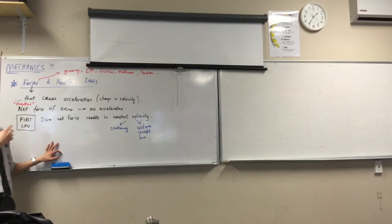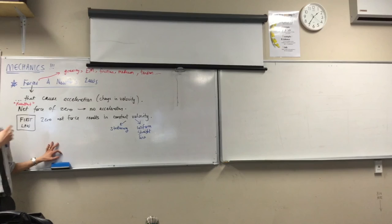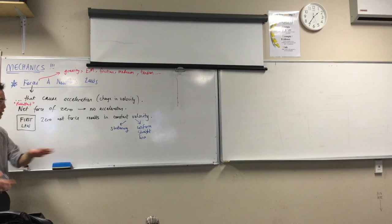So, this tendency of objects, and we're going to have particles, bodies, things with mass, but we don't worry about them spinning around, that kind of thing. Their tendency to resist acceleration, their tendency to remain at constant velocity, we call this inertia. So, the first law is all about inertia.